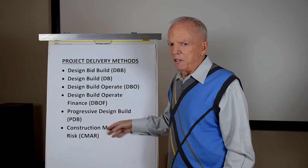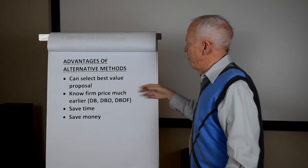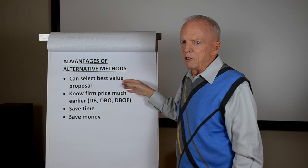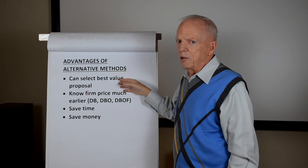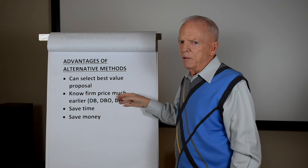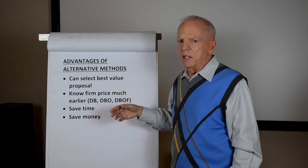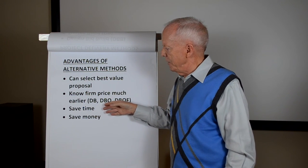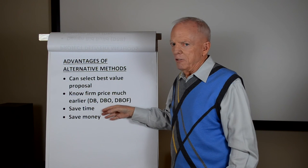Why consider even looking at some of these? There are some potential advantages. One that's very important to owners is they can select the best value project — they are not necessarily stuck with the low bidder. Sometimes the best proposal also has the lowest price, but they're not necessarily bound to the lowest bid. With design-build options you know a firm price right at the start of the job. Conventionally, you may go a year and a half before knowing whether the project will come in within budget. And if it's the right kind of project and the method is appropriately applied, you will save time and money, and there's plenty of documentation of that.